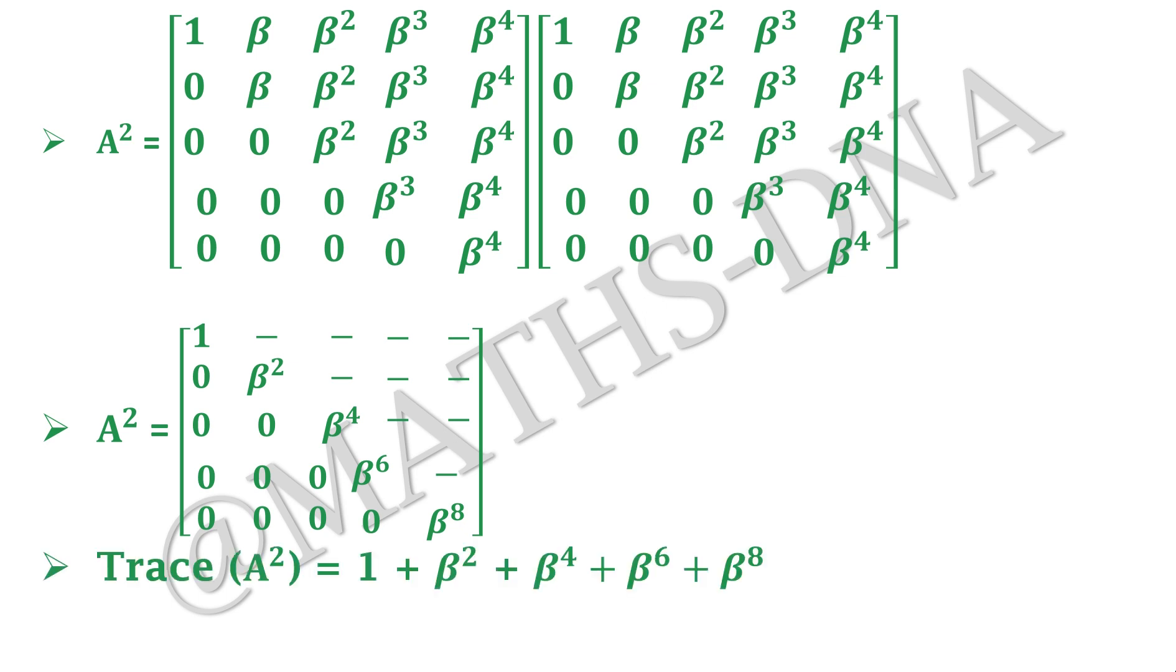And here trace of A² = 1 + β² + β⁴ + β⁶ + β⁸. And if you don't find the remaining entries of the matrix then also it is okay. Because we have to only find the trace and trace is nothing but the sum of diagonal entries.